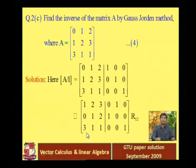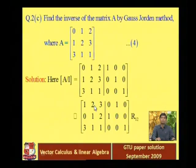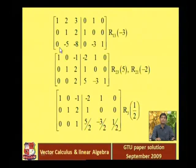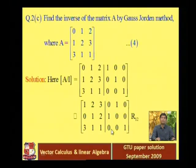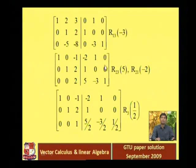In the third row: 3 minus 3 is 0, then 1 minus 3×2 = minus 5, 1 minus 3×3 = minus 8. Next, 0 minus 3×0 = 0, 0 minus 3×1 = minus 3, and 1 minus 3×0 = 1. So the new third row is 0, minus 5, minus 8, 0, minus 3, 1.